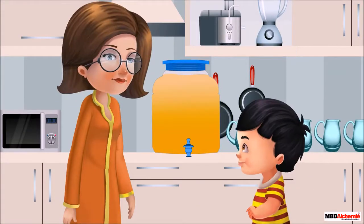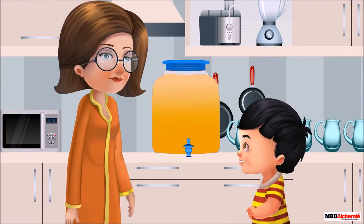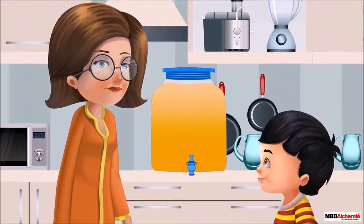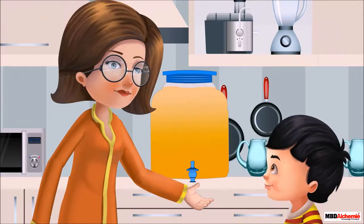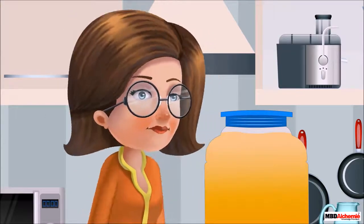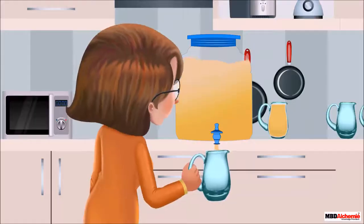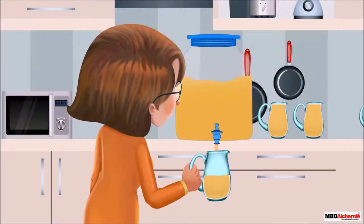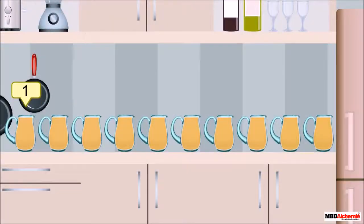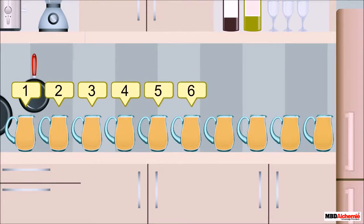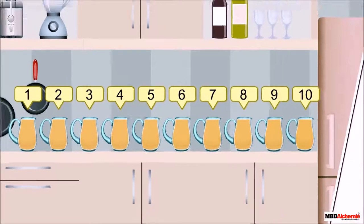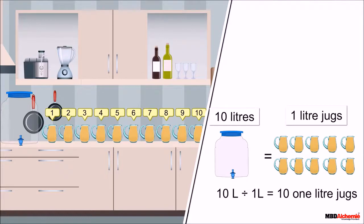Sid asks his mother how many one liter jugs can be filled from this container. Mother says for finding this, we distribute the total juice into one liter jugs. One, two, three, four, five, six, seven, eight, nine, ten. So here we see 10 liters of juice is equally distributed in 10 one-liter jugs, or we can find this by simply dividing 10 liters by 1 liter.